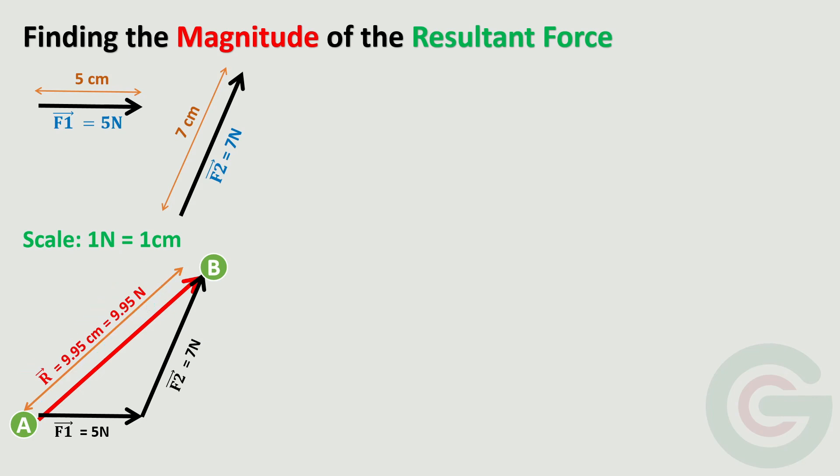Vectors can be joined geometrically in any order. Let's do it differently. Let's take force F2 first and then join F1. And again, we get the resultant the same magnitude and direction.